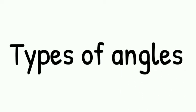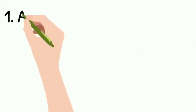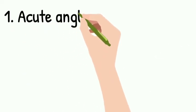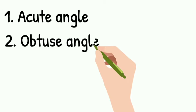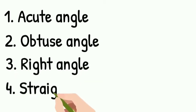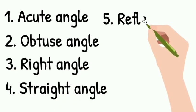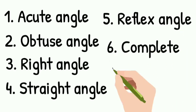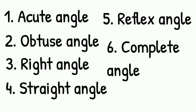Now let us learn about the types of Angles. The first angle is acute angle, followed by obtuse angle, right angle, straight angle, reflex angle, and at last complete angle. Now let us learn about them in detail.